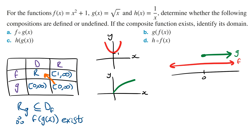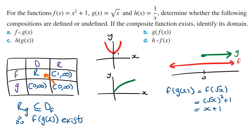To find the rule of f of g of x, this is going to be f of root x. Wherever there is an x in the function f of x, we replace it with root x. And so this is going to be root x squared plus 1, which simplifies to x plus 1. The domain of this composite function is the domain of the inner function, which is from 0 to infinity. So the domain of f of g of x is from 0 to infinity.